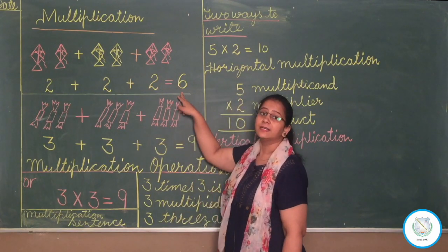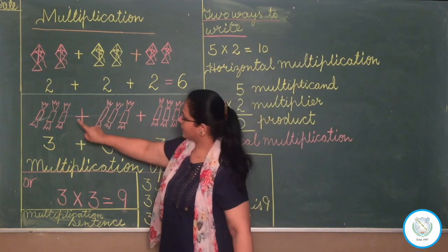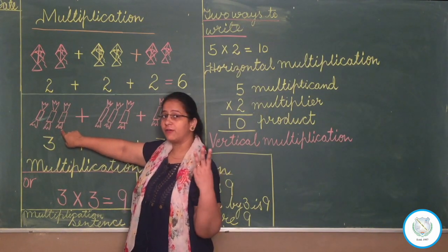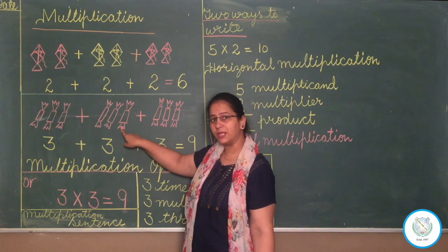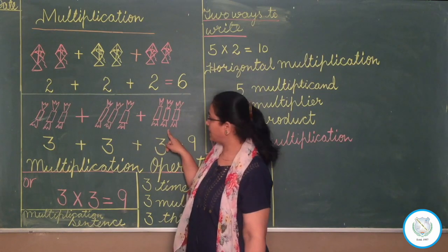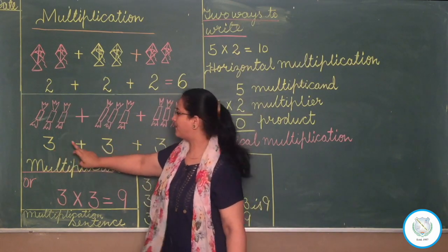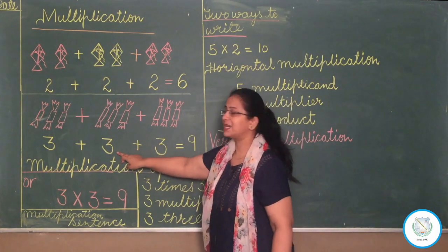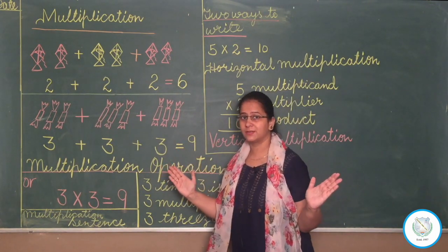Now let us see another example. See three toffees — how many toffees are there? One, two, three. There are three toffees in one box. Another box has also three toffees, one two and three. And another box also has three toffees. So how many toffees are there in total? Three plus three plus three is equal to nine.